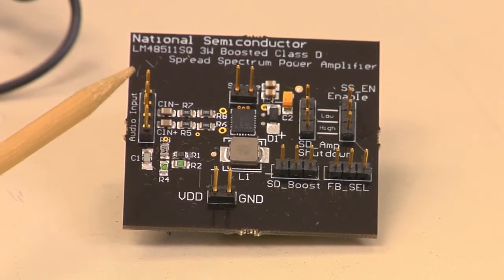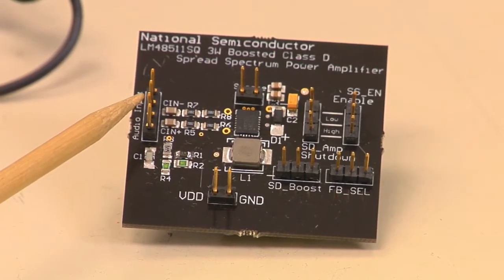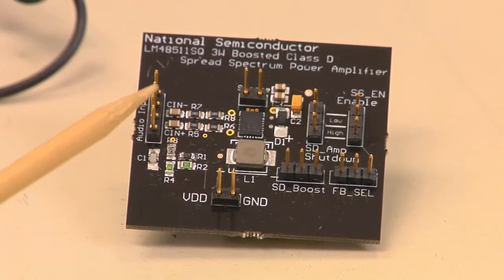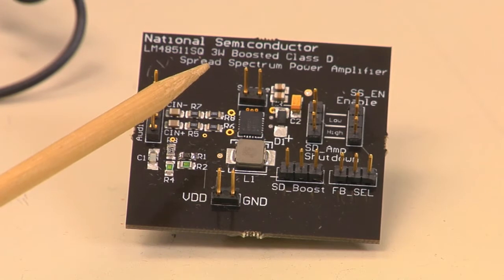The second thing are the inputs. We have a plus and minus input here, and we have two ground connections that are supplied for you on the inputs, and the output is a bridge output.